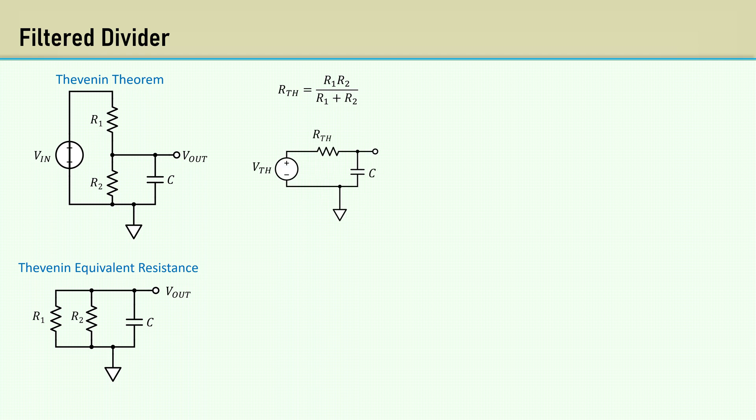That simplifies the circuit to a simple RC network. The Thevenin equivalent voltage is simply the voltage divider equation. I'll rearrange to solve that for Vout over Vn and call that alpha.